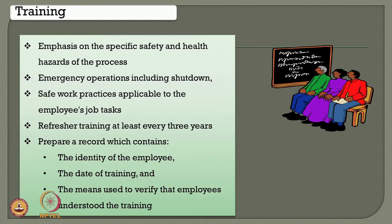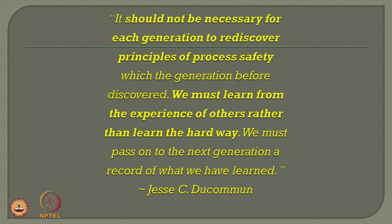Training becomes a vital part in successful implementation of any process safety management program. Emphasis should be on specific safety and health hazards of the process. Emergency operations including shutdown should be communicated clearly. Safe working practices applicable to the employee's job task must be highlighted. Refresher training should be conducted at least once every three years, and a record of the employee identity, date of training, and means to verify understanding must be prepared. Finally, please understand that it should not be necessary for each generation to rediscover principles of process safety which the generation before has already discovered — we must learn from the experience of others and pass on experience-based information to the next generation as a record of what we have learnt.